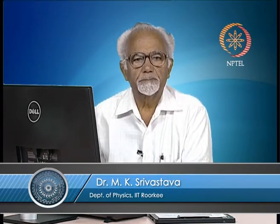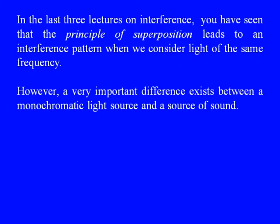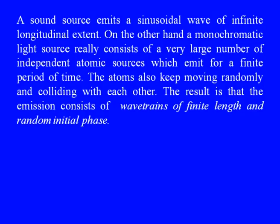In the last three lectures on interference, we have seen that the principle of superposition leads to an interference pattern when we consider light of the same frequency. However, a very important difference exists between a monochromatic light source and a source of sound. A sound source emits a sinusoidal wave of infinite longitudinal extent. On the other hand, the monochromatic light source really consists of a very large number of independent atomic sources which emit for a finite period of time. The atoms also keep moving randomly and colliding with each other. The result is that the emission consists of wave trains of finite length and random initial phase.